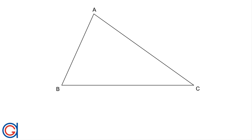Hello, today we are going to learn how to draw a circumscribed circle of a given triangle by locating its circumcenter point. The circumcenter point is one of the four notable points of a triangle. The circumcenter point of this triangle is the center point of a circle which passes through the three vertices of the triangle.